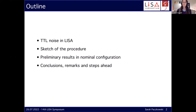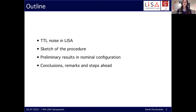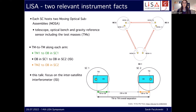Let me highlight two facts about LISA which are very important for this talk. First, each of the three LISA spacecrafts hosts two moving optical sub-assemblies, or MOSAs, which contain the telescope, the optical bench, and the gravity reference sensor with the test mass — shown here as the golden cubes with the telescope marked in orange. Second, the measurement of changes in proper distance between the two test masses along one arm is split into three interferometer measurements: the test mass to optical bench measurement on the local spacecraft, the changes in relative distance between the two optical benches on the intersatellite link, and the test mass displacement with respect to the optical bench on the far spacecraft. This talk focuses on the intersatellite interferometer measurement, or ISI.